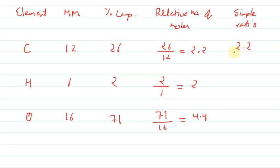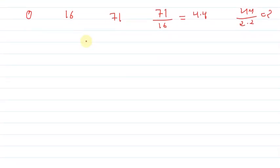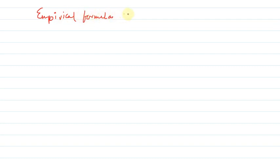Now if we find the simplest ratio, we can divide all values by 2.2. Dividing all by 2.2, the simple ratio we get is 1 : 1 : 2. So if we write the empirical formula on this basis, our empirical formula will be C₁H₁O₂.